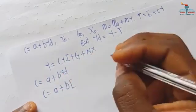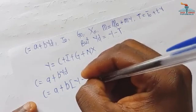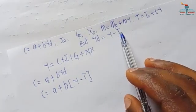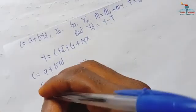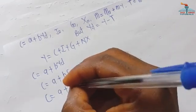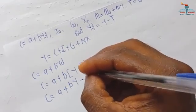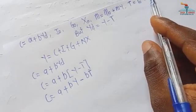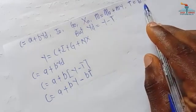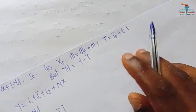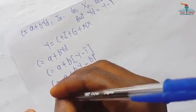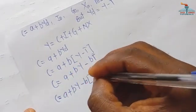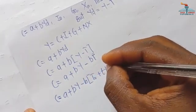So C equals a plus b times (Y minus T), because Yd equals Y minus T. We also know that T equals T0 plus tY. Wherever we see T in this equation, we substitute T0 plus tY, giving us C equals a plus b times (Y minus (T0 plus tY)).